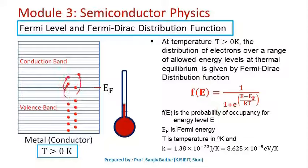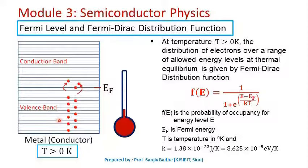This probability of occupancy is very important because it can be used to find the number of electrons. If we know the density of states — that is, the number of energy levels per unit volume — and multiply it by the probability of occupancy, we can calculate the number of electrons per unit volume, i.e., the electron concentration.